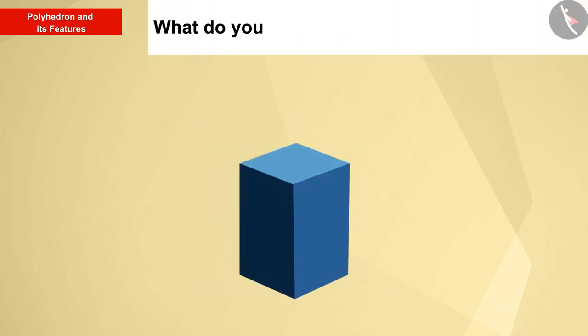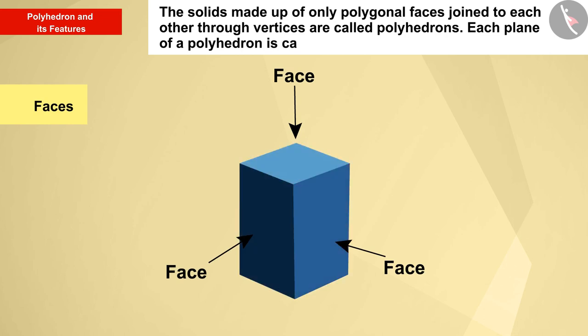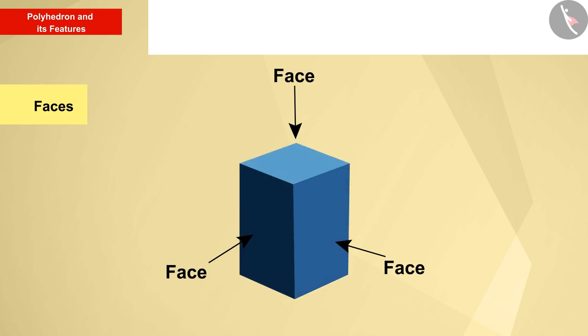What do you understand by polyhedron? The groups of polygons that are joined to each other at the edges are called polyhedron. Each plane of a polyhedron is called a face. Can you tell the edges and the vertices of this polyhedron?